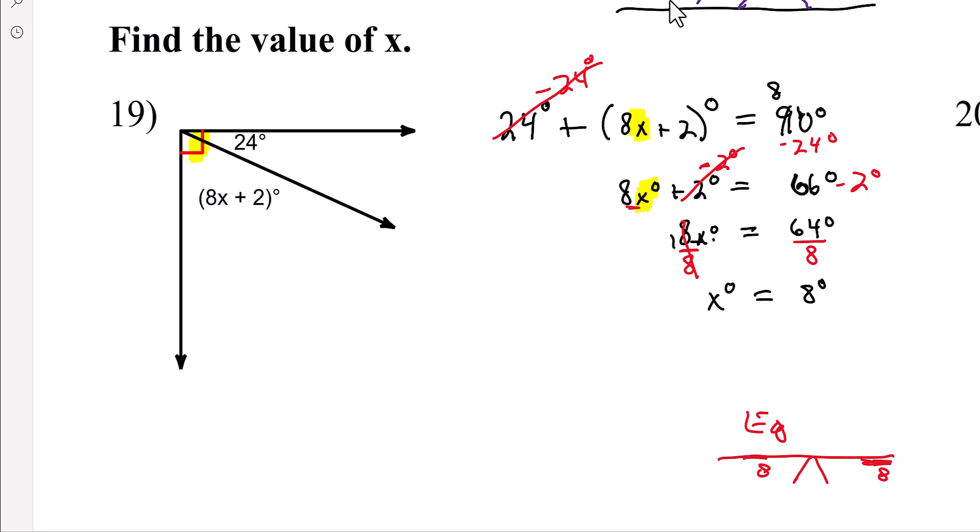Now, you have to do, this part you don't have to write on your paper, but this is where you do the calculator check. We need to know that 24 degrees plus 8 times that x value is 8, so we're going to substitute in 8 right there, 8 degrees, plus 2 degrees. All of those add up to 90 degrees, so let's see if that's true.